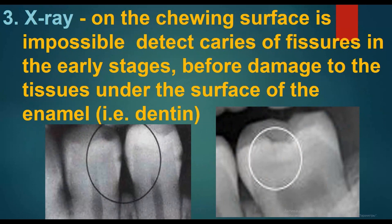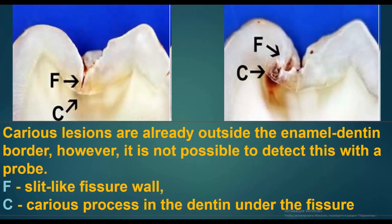For X-ray: on the chewing surface, it is impossible to detect caries of fissures in the early stage before damage to the tissues under the surface of the enamel or dentin. Carious lesions are already outside the enamel-dentin border; however, it is not possible to detect this with a probe. The images show a slit-like fissure and a carious process in the dentin under the fissures.